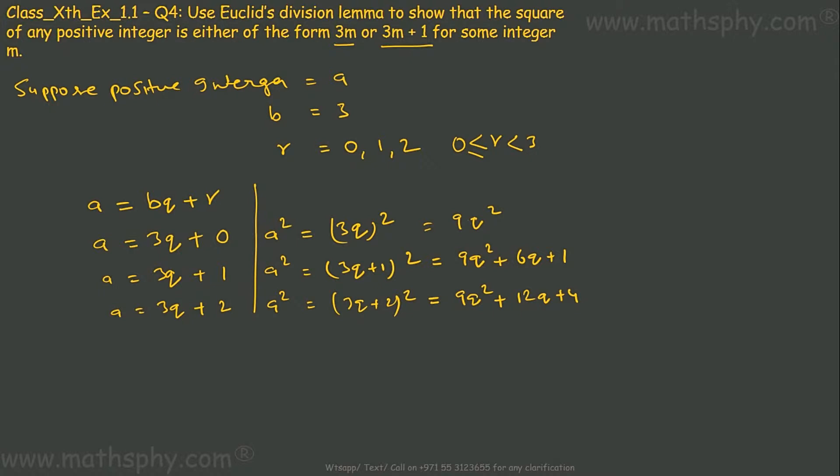Now if we divide 9Q² or 9Q² + 6Q + 1 or this one by B which is 3, let's see what remainder we get. When 3 divides 9Q², it gives me 0 remainder. R is 0.